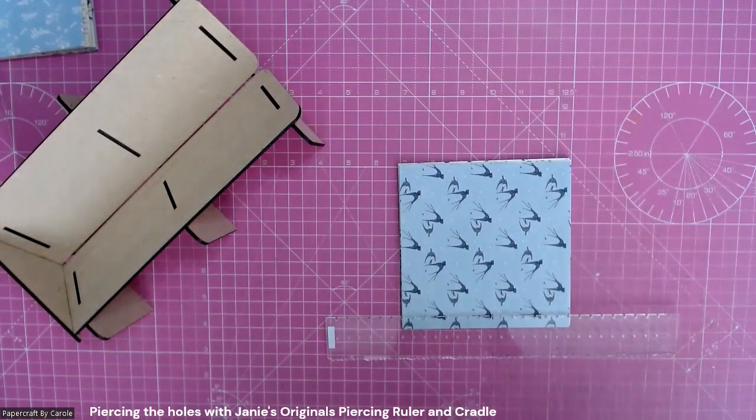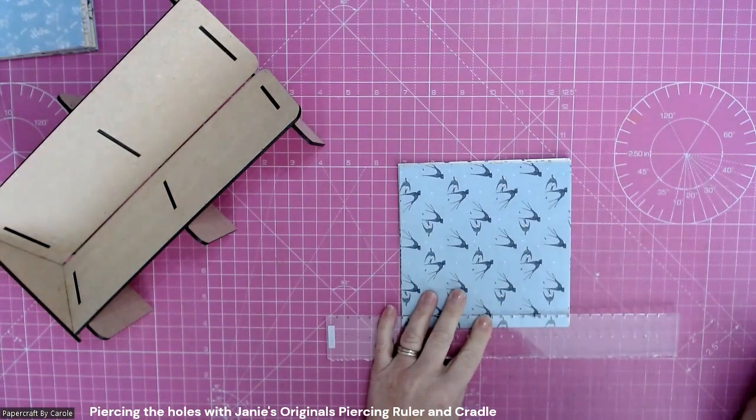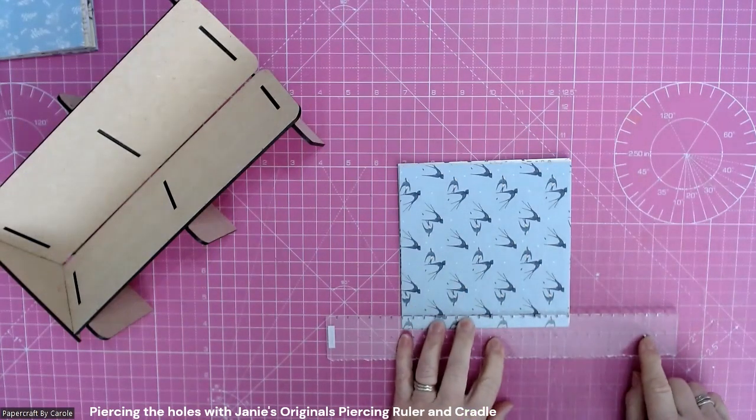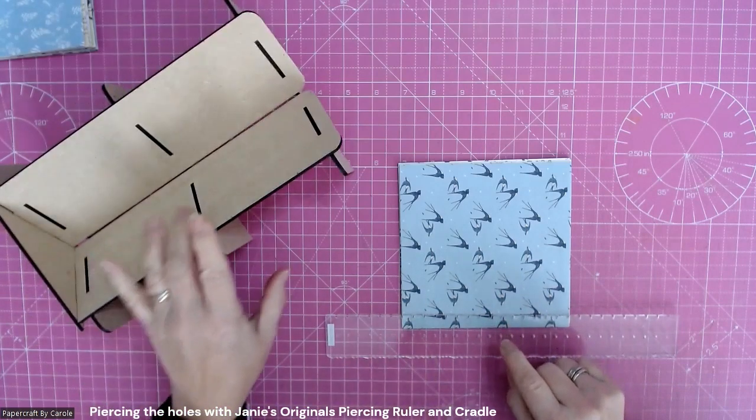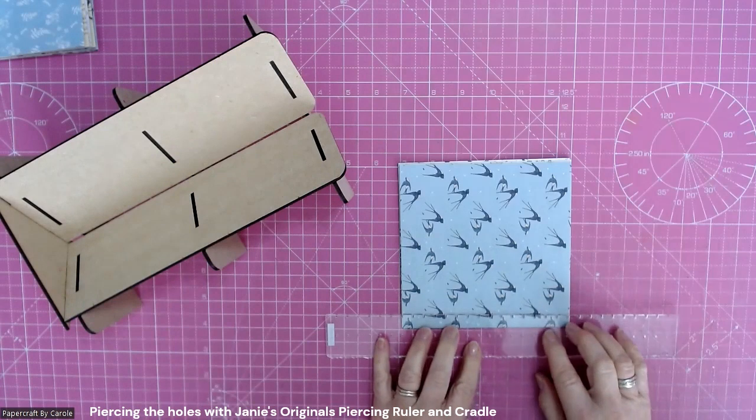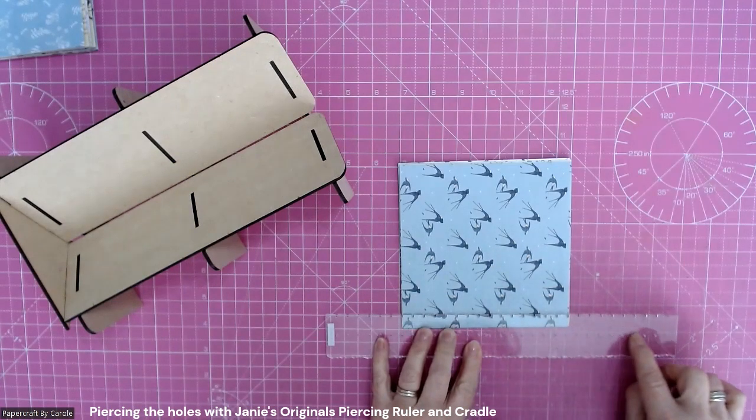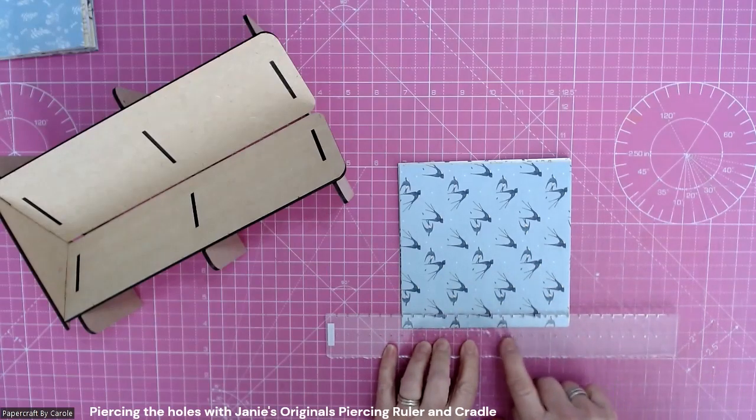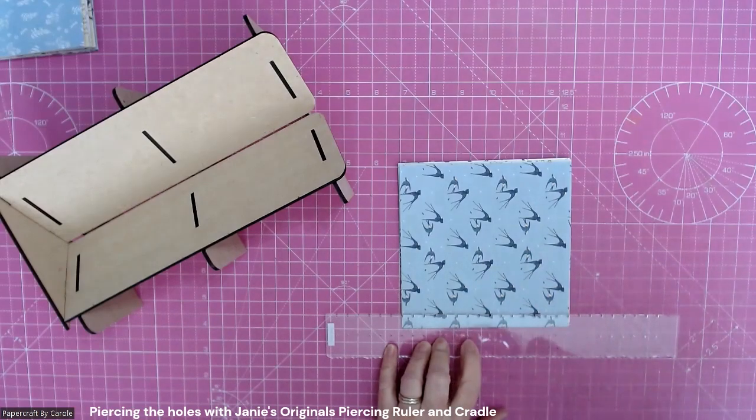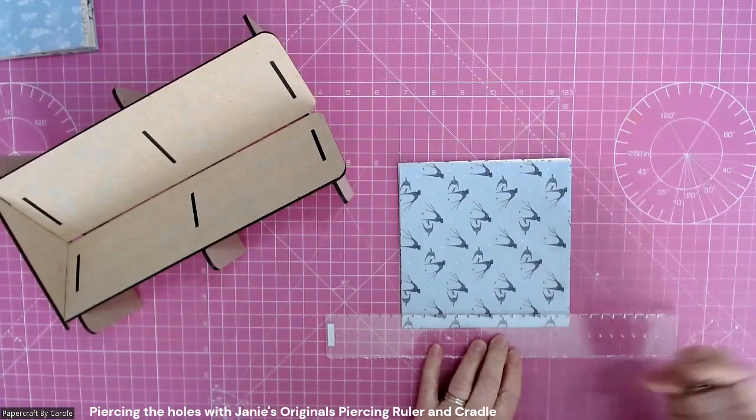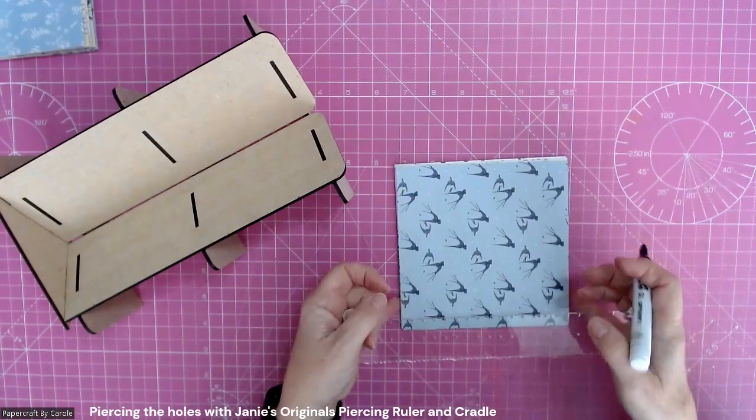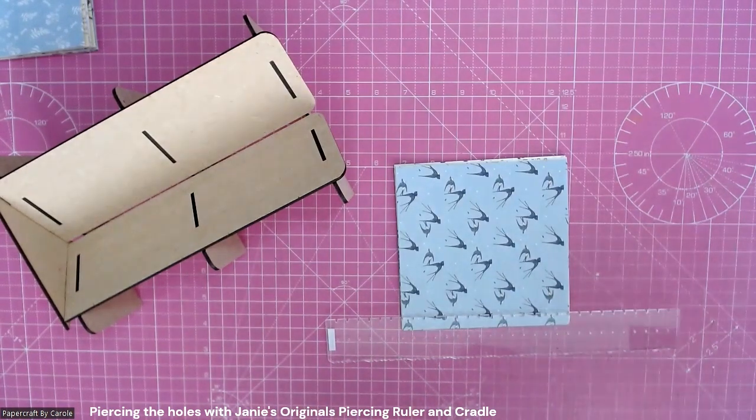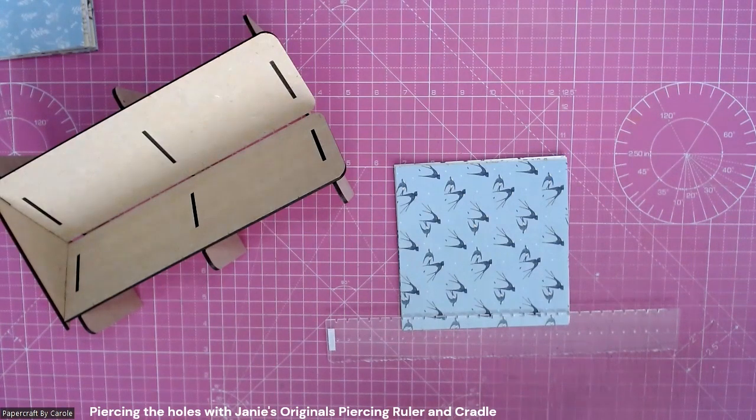I'm going to use some pieces of equipment from Janie's Originals. I've got the piercing ruler here which has these little grooves here which we'll be using when we use the cradle to punch the holes. It's got a similar set of holes in the middle lining up with these, you can use when you're punching into your spine. This side is a deckle edge which you can use for tearing. What I'm going to do is just mark where I want to punch. I'm going to be creating six holes.